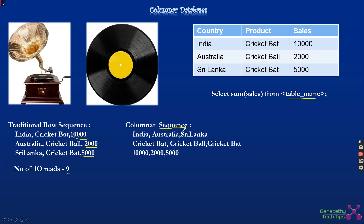In columnar storage, data is stored in a columnar way: India, Australia, and Sri Lanka are stored in one row; cricket bat, cricket ball, cricket bat in another row; and ten thousand, two thousand, five thousand in the third row. If I fire the same analytics query against this columnar data, there is no need to scan across the first two rows — I simply scan the third row, which is only three IO operations. I take that data, perform the aggregation, and return the result.